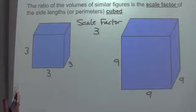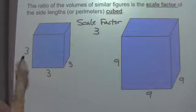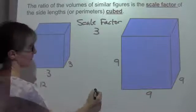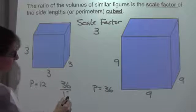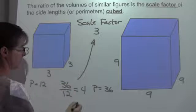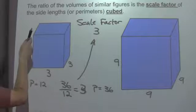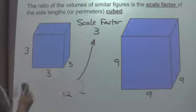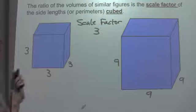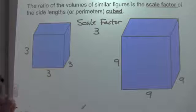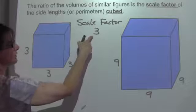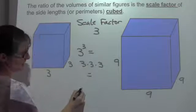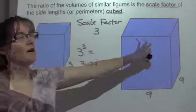If I compare the perimeters of one face, the perimeter for the smaller cube's face would be 12. The perimeter for the larger one would be 36. 36 divided by 12 is 3. Remember, the side lengths are going to be equal ratios with the proportions — that's where our scale factor comes into play. What we're comparing is the volume of the two figures. The volume ratio should be my scale factor cubed, which is 3 cubed, the same as 3 times 3 times 3, which is 27.